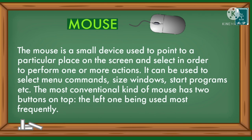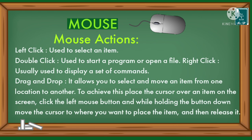The mouse is a small device used to point to a particular place on the screen and select in order to perform one or more actions. It can be used to select commands, resize windows, start programs, etc. The most conventional kind of mouse has two buttons on top, the left one being used most frequently.